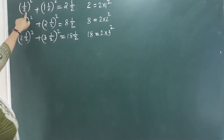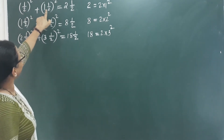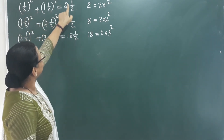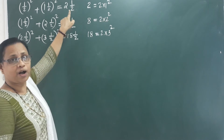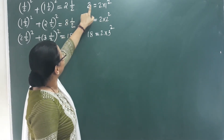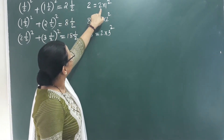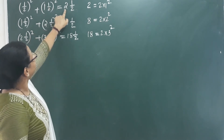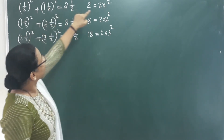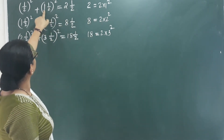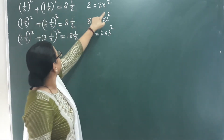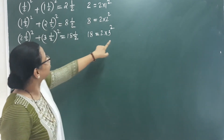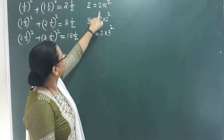Look at this pattern: 1 and a half squared plus 1 and a half squared equals 2 into 1 squared. Here 2 is common. So 1 squared, 2 squared, 3 squared — that's why we multiply by 2.